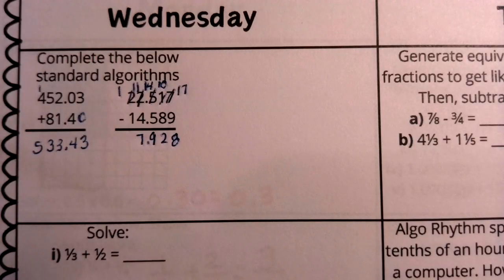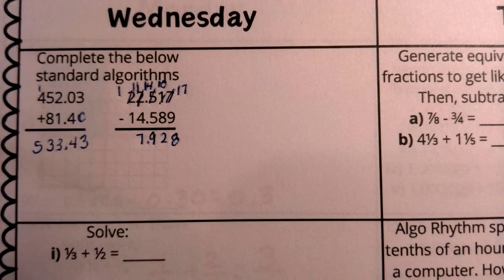That was a lot of borrowing and regrouping. A really good opportunity to see if we're accurately doing that skill combined with our decimal place values. My answer is 7 and 928,000.